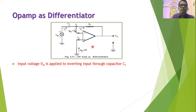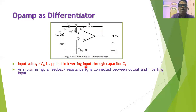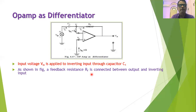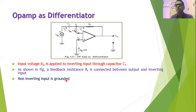Input voltage VIN is applied to the inverting input through capacitor C1. The feedback resistance RF is connected between the output and the inverting input. The non-inverting terminal of the operational amplifier is grounded, and therefore this circuit is in the inverting mode.